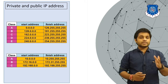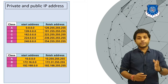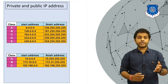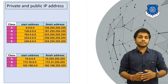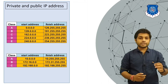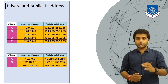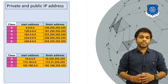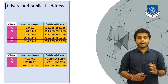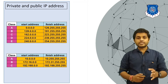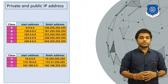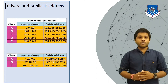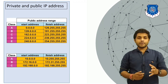The range of private IP addresses in each class: in Class A it is 10.0.0.0 to 10.255.255.255; in Class B it is 172.16.0.0 to 172.31.255.255; and in Class C it is 192.168.0.0 to 192.168.255.255. These are the private IP address ranges.